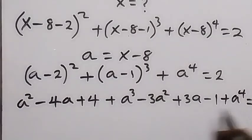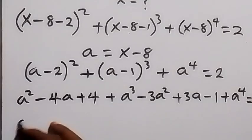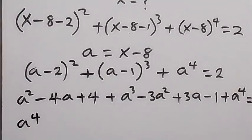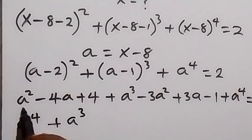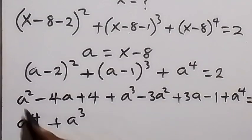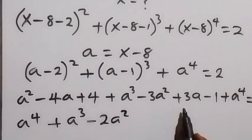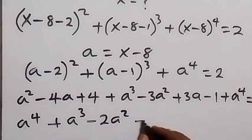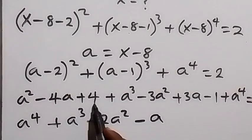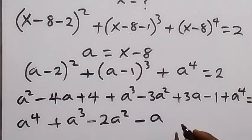We bring the 2 to this side and collect like terms, rearranging: a to the power 4, plus a cubed, then a squared minus 3a squared gives minus 2a squared, then minus 4a plus 3a gives minus a, then 4 minus 1 is 3 minus 2 gives plus 1, equals 0.